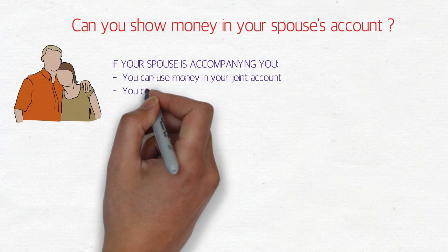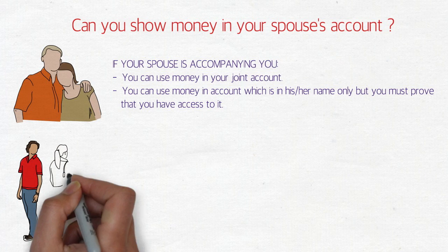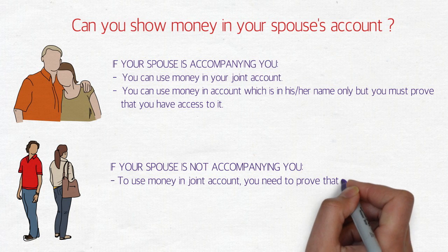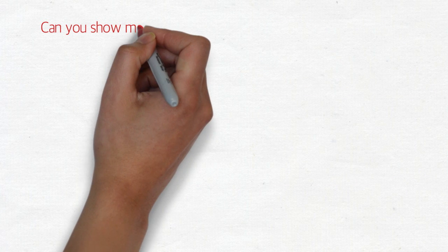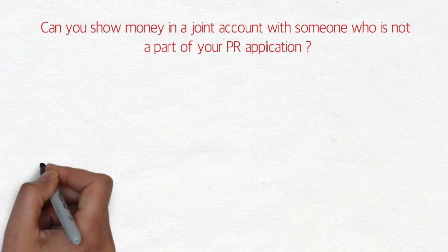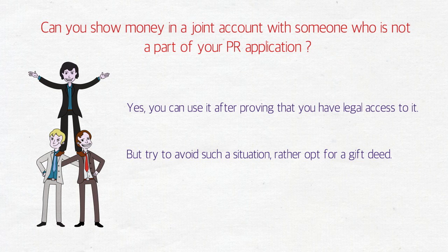Sixth question: Can you show money in your spouse's account? There are two cases. If your spouse is accompanying you, you can use money in your joint account or in an account solely in your spouse's name — but you must prove that you have access to it. If your spouse is not accompanying you, to use a joint account you need to prove you have access to it, and to use money solely in their account you might need a gift deed. It's better to have money in your own bank account to keep things simple.